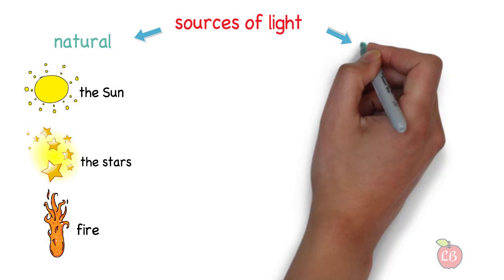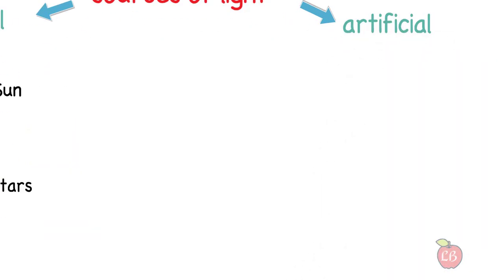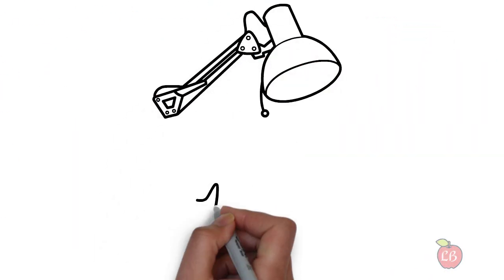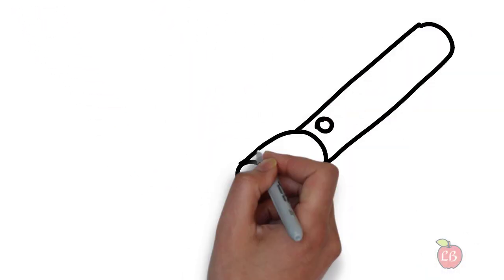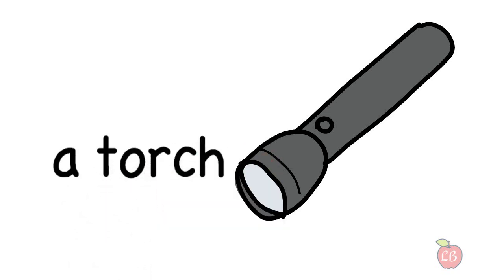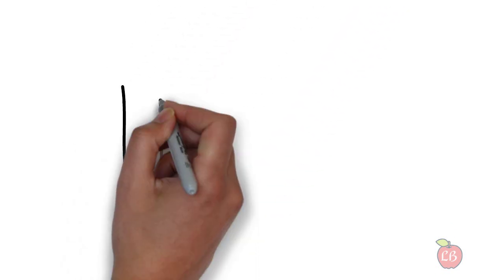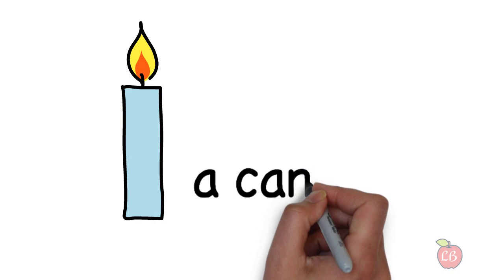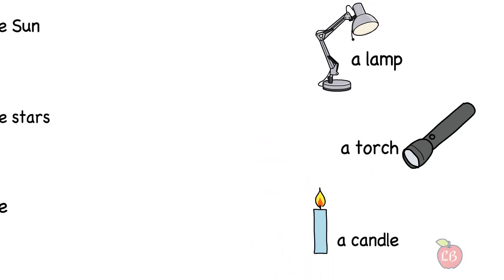Artificial sources of light. Examples of this are the light given off by a lamp, or by a torch. Another example of artificial light is the one given off by a candle.